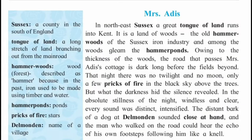Mrs. Addis — in North East Sussex, a great tongue of land runs into Kent. It is a land of woods, the old hammer woods of the Sussex iron industry, and among the woods gleam the hammer ponds. At the beginning of the story, the writer speaks about the location. The story happened in North East Sussex — it is a land of woods. There were many forests in the Sussex region and also many ponds.